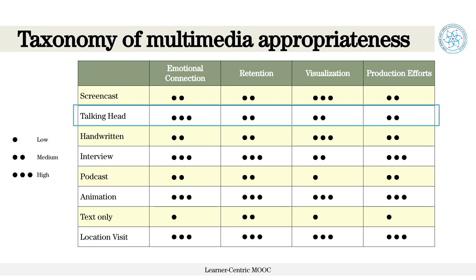Now if I compare with high production requirements — animation — it could be average on emotional connection, though today we can have avatars or mascots talking to you. Animation can have high retention because you can show text about a definition and take a screenshot. There could be extremely high visualization because animation can show things that a camera cannot capture. But it will be extremely high on production efforts — requiring animators with days and months of work. So you get a fair idea of how it works. Let us now see some examples from this course itself and why we took such decisions while selecting the medium.